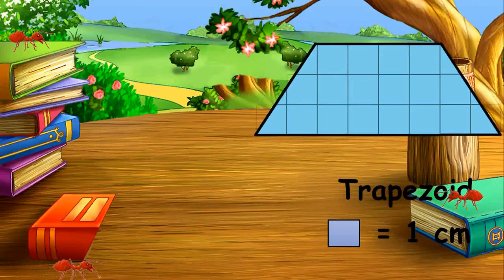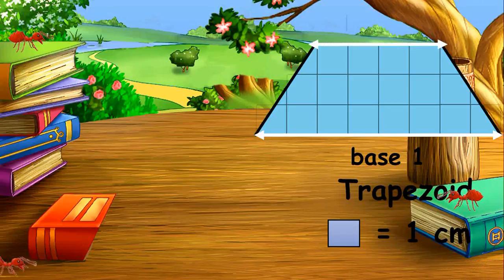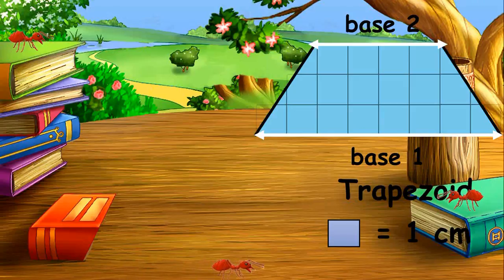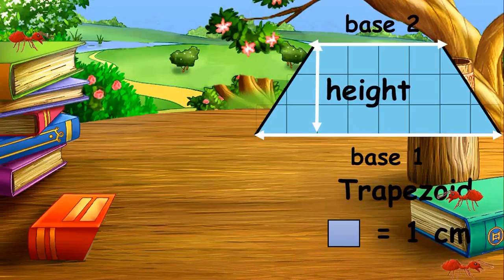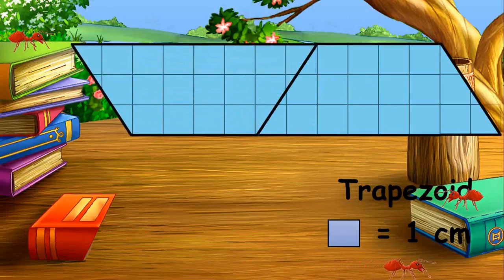A trapezoid is a four-sided figure with one pair of parallel sides. In the diagram, the bases are parallel. To find the area of a trapezoid, take the sum of its two bases, multiply by the height, then divide the result by 2 — because when you double a trapezoid, you produce a parallelogram.